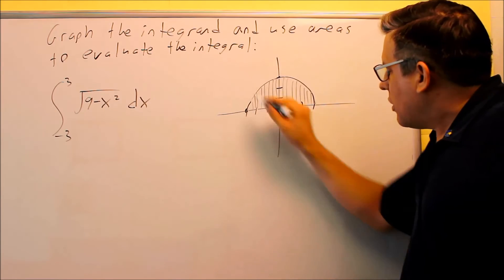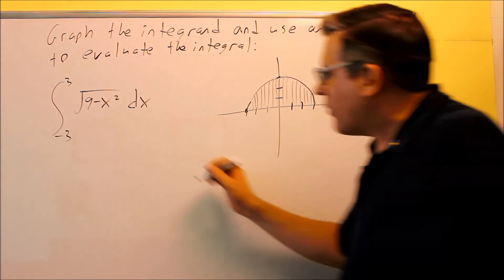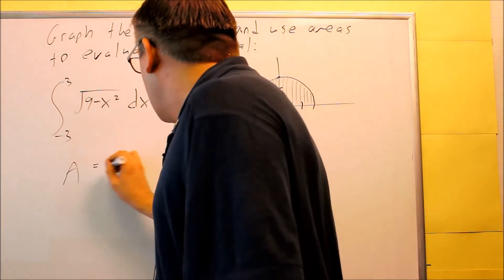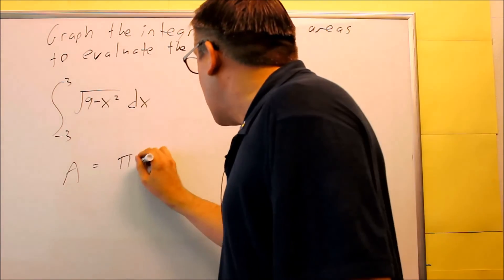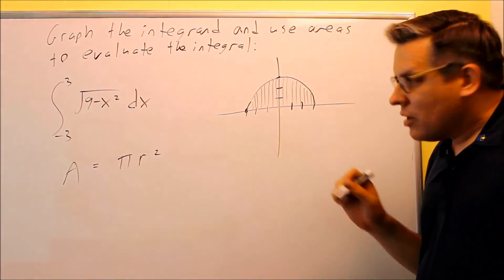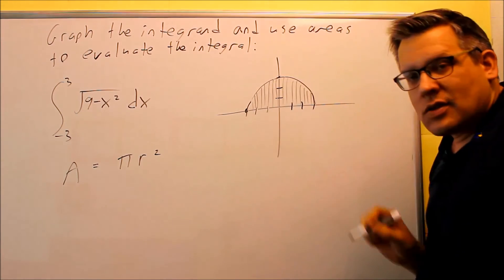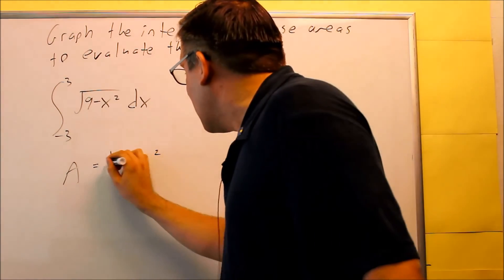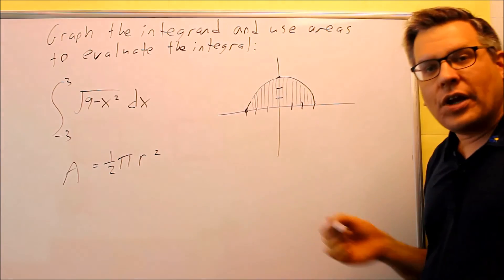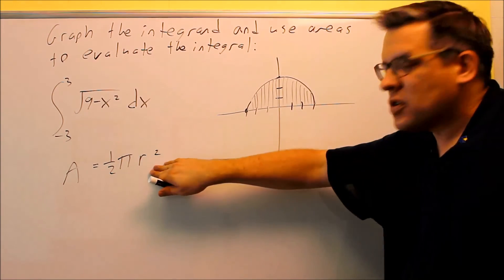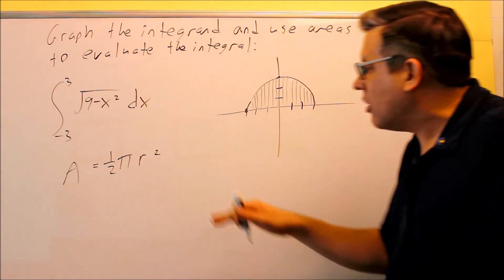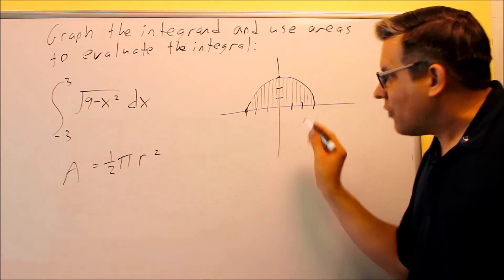All right. Now this is half of a circle, so we have to definitely start with the area of a circle formula, which is going to be pi r squared. However, since we are only dealing with a semicircle, I only want half the area of a circle. So this is the specific formula I'm going to use in this problem. I want to take half of the area of a circle with the radius of 3.